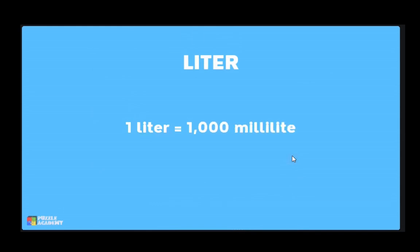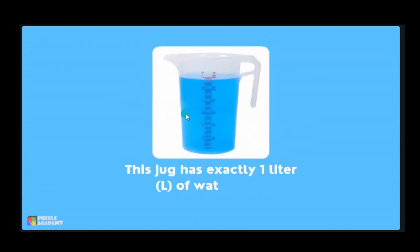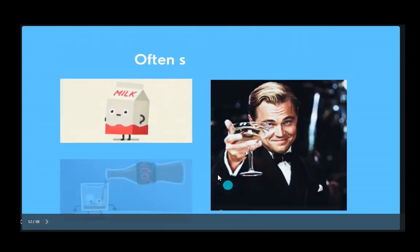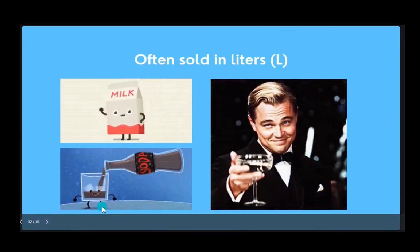A liter is just a bunch of milliliters put all together. In fact, one thousand milliliters is equivalent to one liter. This jug has exactly one liter of water in it. Liters are often written as L for short, so three L means three liters. A capital L is preferred so it doesn't look like the number one. Examples of liters include milk, soda, and other drinks often sold in liters.